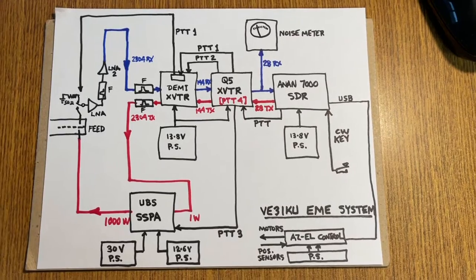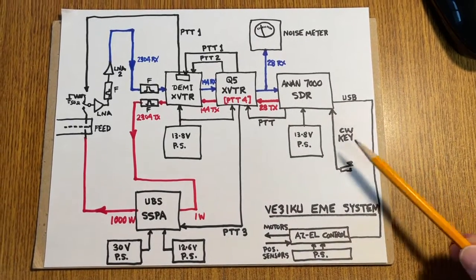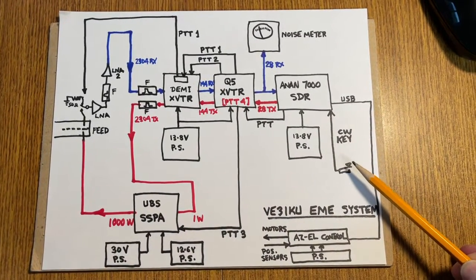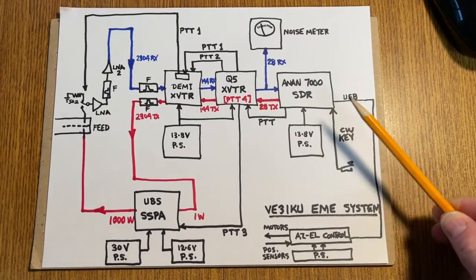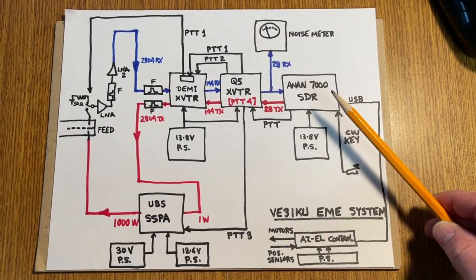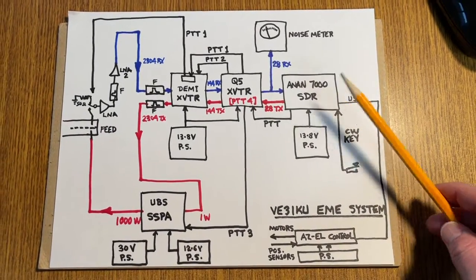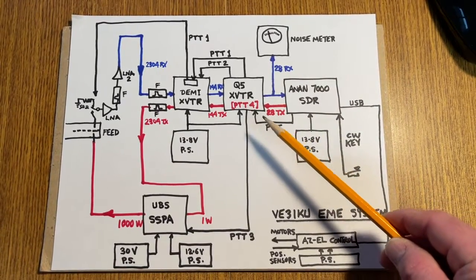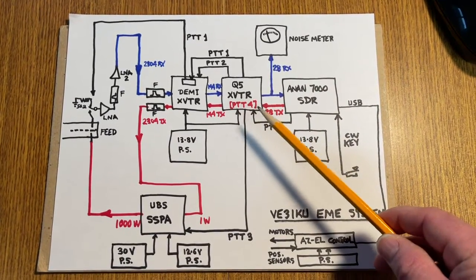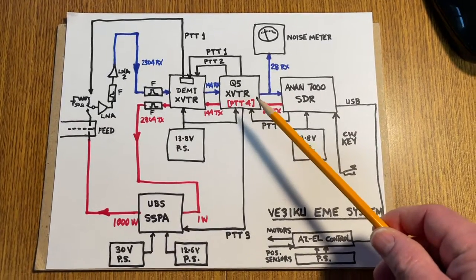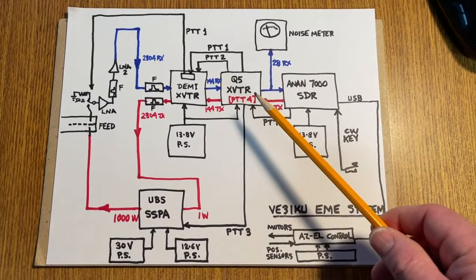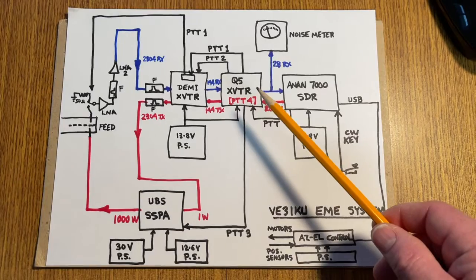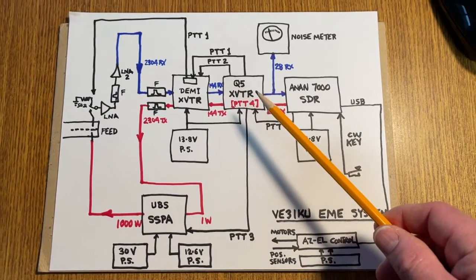Now we'll look at the switching arrangement. When you operate the CW key, the ANAN 7000 DLE goes into semi-break-in mode. A PTT signal is sent to the Q5 signal transverter. There is a sequencer built into this transverter from the factory, and it can be configured in a number of ways: high, low, active. And there are four sequence outputs.